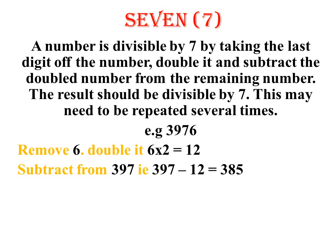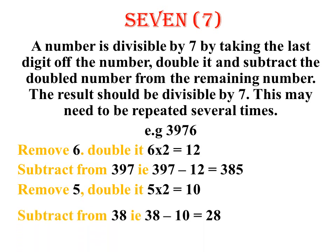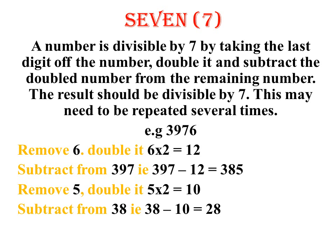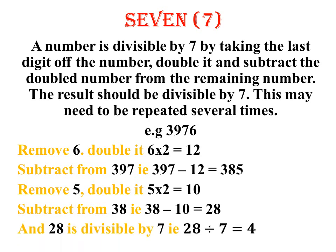Is 385 divisible by 7? At a glance, not very easy to know. So we repeat the same procedure using the answer we have got. For 385, we remove the last digit which is 5, double it to get 10, and we are left with 38. Subtract 10 from 38 — we get 28. Is 28 divisible by 7? Yes — 28 divided by 7 gives 4. That means 3976 is divisible by 7.